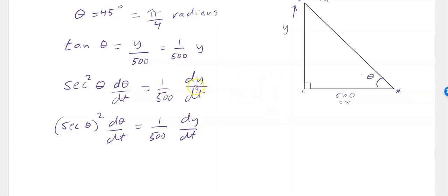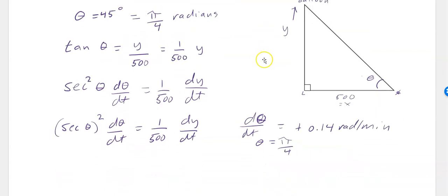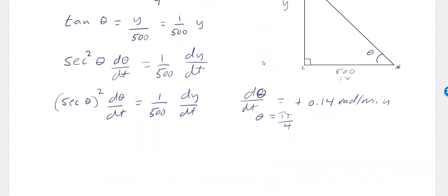That's my governing equation of the relationship between angle and height of the balloon. Tangent θ equals y over 500 is my governing equation. The derivative of it gives me a relationship between the rate of change of the angle. I was also told dθ/dt is positive 0.14 radians per minute, and I know θ is π/4 radians. Let's see what I can substitute and see what I might be missing.